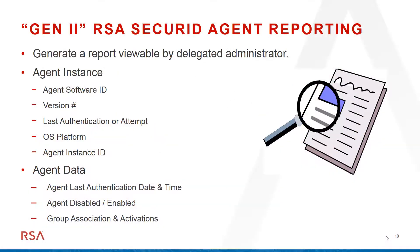Number four: improvements in reporting. A lot of admins want to see who last authenticated and what the last attempt was. When doing research on whether to remove a user, you can now see that a token hasn't been used for the last three years and decide why it's still active.